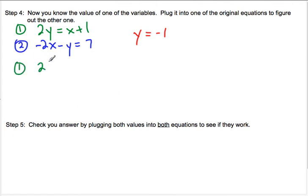So we have 2 times negative 1. Now the parentheses are important here because if you didn't have them, it would look like 2 minus 1. But clearly, this is supposed to be multiplication. So we want to keep that in mind. Equals x plus 1. And so solving that, we get negative 2 equals x plus 1.